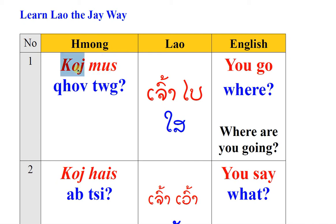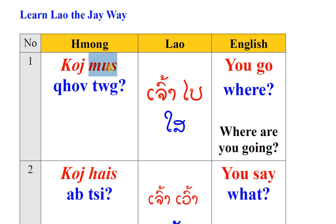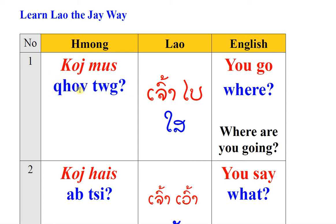First word: Co (Lao), chau — high pitch here — (Hmong), you (English). Next: mu (Lao), bye (Hmong), go (English). Then: khó tử (Lao), xài — low pitch here — (Hmong), where (English).